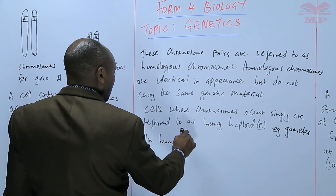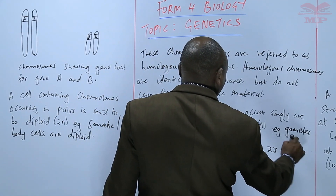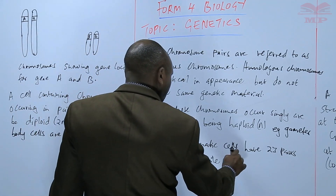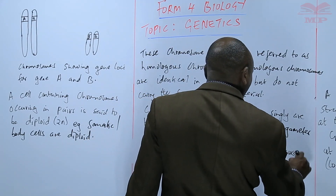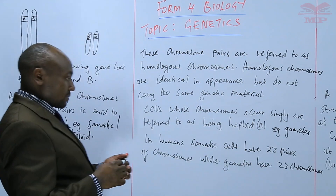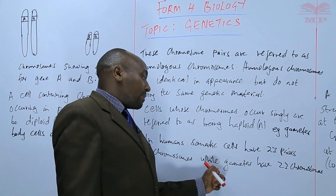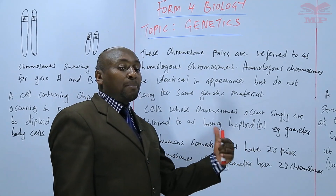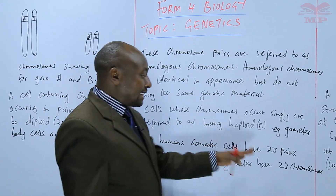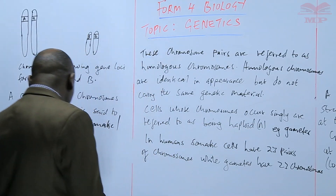In humans, somatic cells — body cells — have 23 pairs of chromosomes, while gametes have 23 chromosomes. Somatic cells, being diploid, have 46 chromosomes in total, whereas gametes have 23. Gametes are haploid — they have half of what is in the somatic cells — because one day they will undergo fertilization, combining to regain the 46 chromosomes required in a somatic cell.